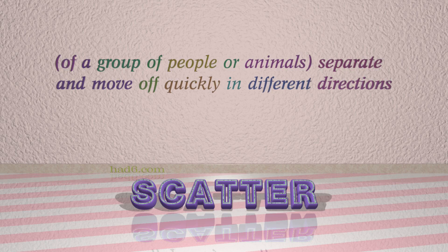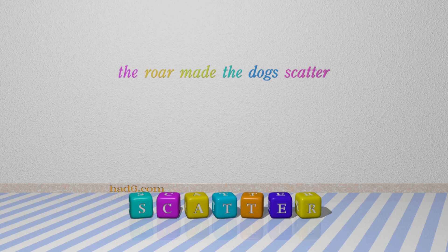Number 6: Scatter, which means of a group of people or animals, separate and move off quickly in different directions. For example: The roar made the dogs scatter.